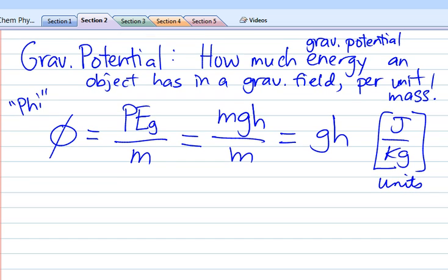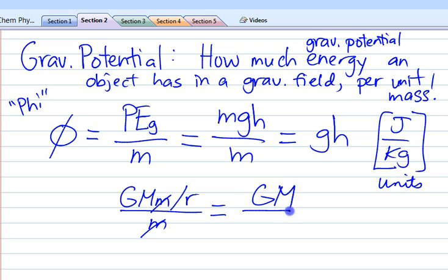And then the other thing is that we can take the long version, GMM over R, and divide that by M. And that gives us GM over R. This is another way of writing the gravitational potential. And so both of these have units of joules per kilogram, units of energy.